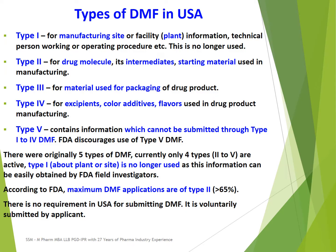Coming to types of DMF in USA, there are basically five types. Type 1 is for manufacturing site or facility or manufacturing plant, and this type has been discontinued by FDA — no more use by FDA. Type 2 DMF is for drug molecule or its intermediates or starting material used in manufacturing of the drug molecule. Type 3 DMF is for material used for packaging of drug product or formulation. Type 4 DMF is for excipients, color additives or flavors used in formulation manufacturing. Type 5 DMF contains information which cannot be submitted through Type 1 to Type 4 DMF, but FDA discourages use of Type 5 DMF.